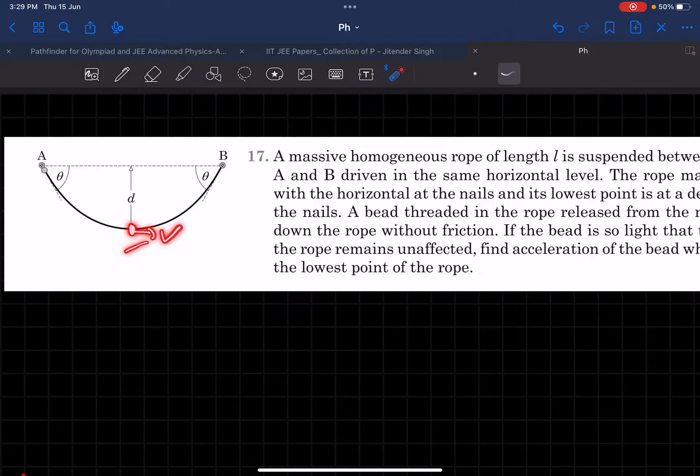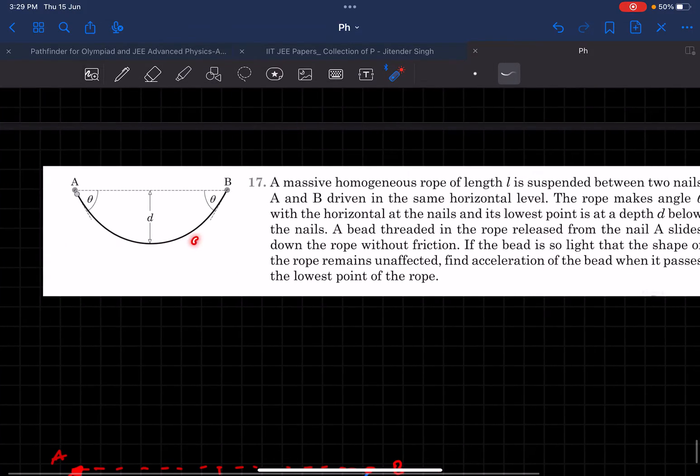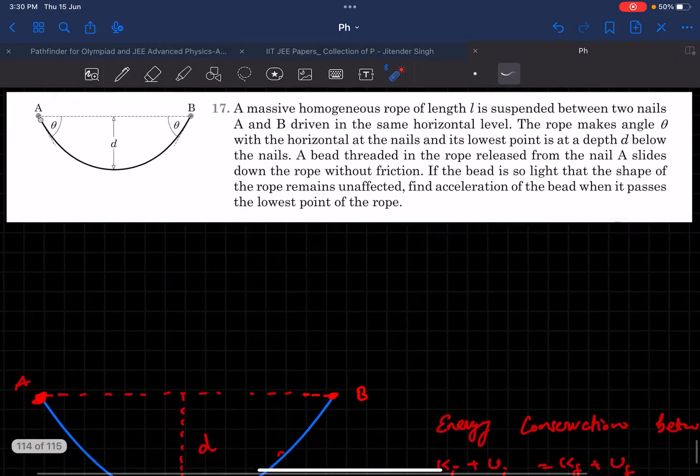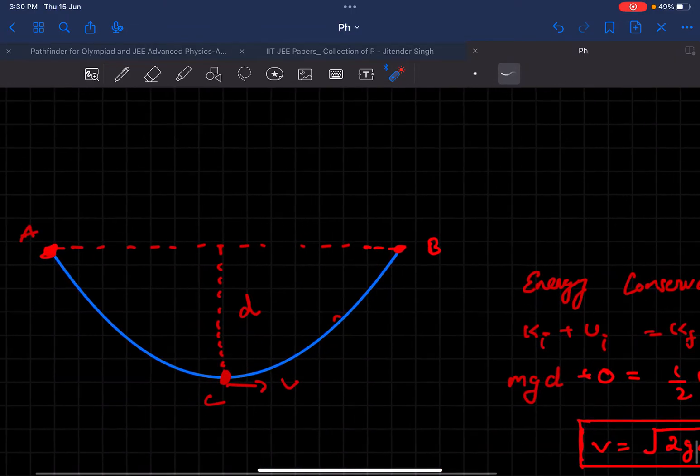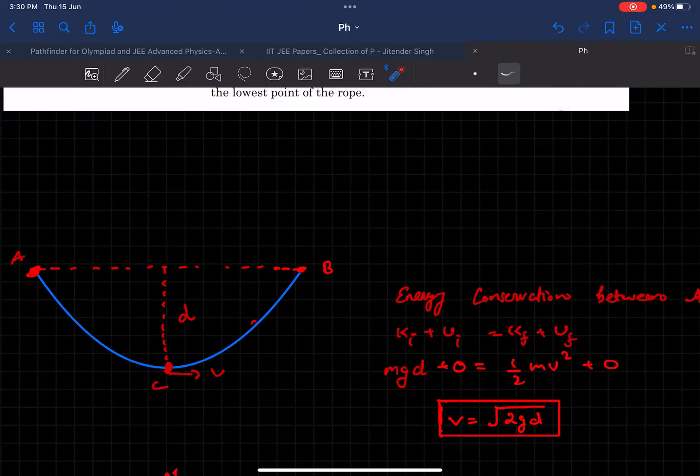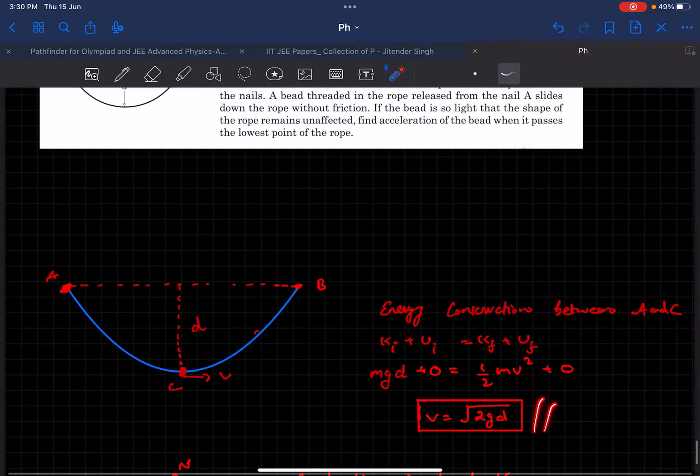The length of the rope is given to be l, this depth is d, and the angle theta is also given. Beginning with the solution, first of all we can easily find the velocity at point C by conserving energy between point A and point C. Because there is no friction, energy will be conserved in this case and the velocity will be v = √(2gd).